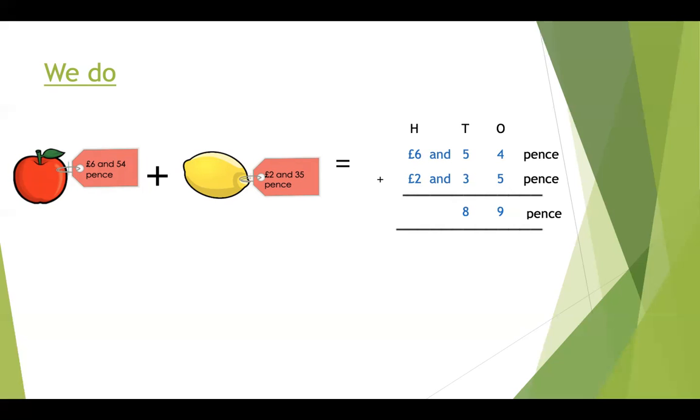And lastly we're going to add up the hundreds column where the pound coins are. So can you try and work out what is six pounds add two pounds? That's right, eight pounds. And remember we're going to write our answer as eight pounds and eighty-nine pence.